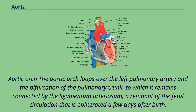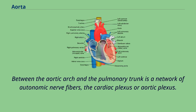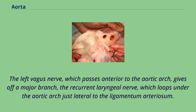The aortic arch loops over the left pulmonary artery and the bifurcation of the pulmonary trunk, to which it remains connected by the ligamentum arteriosum, a remnant of the fetal circulation that is obliterated a few days after birth. In addition, the aortic arch crosses the left main bronchus. Between the aortic arch and the pulmonary trunk is a network of autonomic nerve fibers, the cardiac plexus or aortic plexus. The left vagus nerve, which passes anterior to the aortic arch, gives off a major branch, the recurrent laryngeal nerve, which loops under the aortic arch just lateral to the ligamentum arteriosum, and then runs back to the neck.